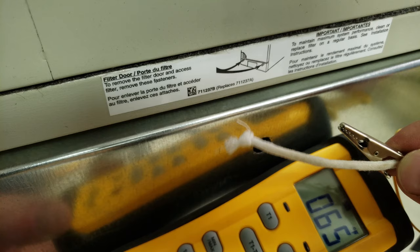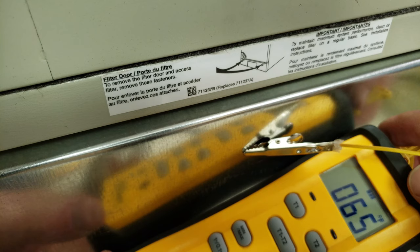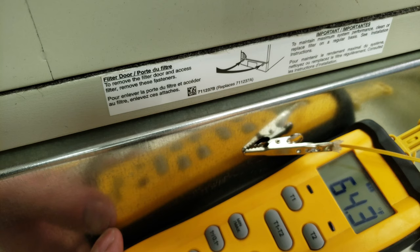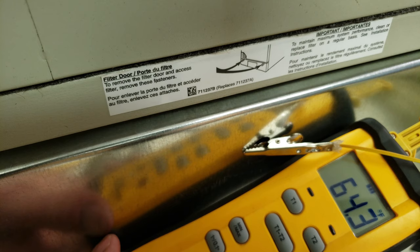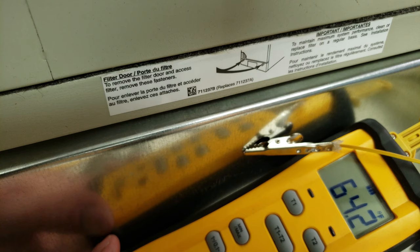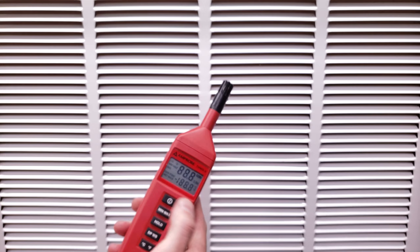Here's our temp reader with our K-Type bead temp sensor with a wet sock over it. I did have this in the duct a few seconds ago, so it should be pretty close to what it's supposed to be. Right about 64.3, but you would normally leave this in the duct for about two minutes or so, but you don't want to dry out the sock either. 64.1.